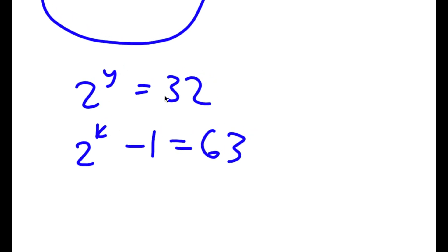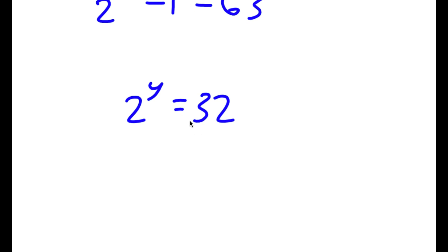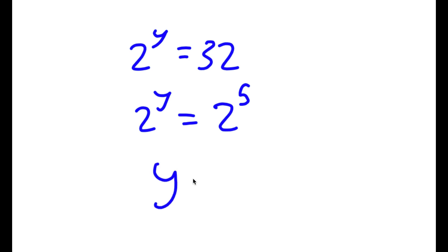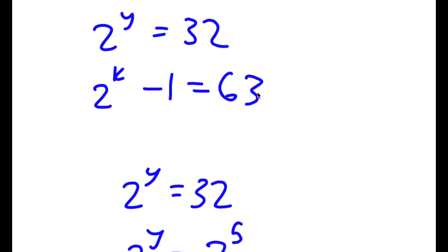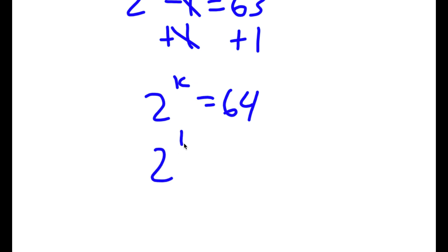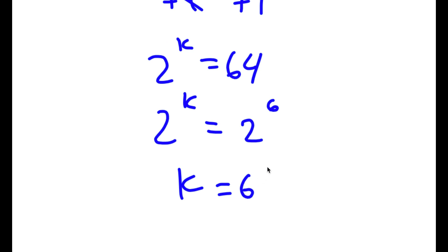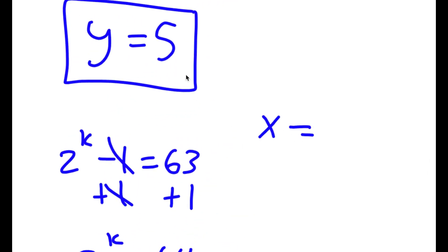For 2 to the power of y equals 32: since 32 is 2 to the power of 5, y equals 5. For 2 to the power of k minus 1 equals 63: adding 1 to both sides gives 2 to the power of k equals 64, and since 64 is 2 to the power of 6, k equals 6. Since x equals y plus k, x equals 5 plus 6, meaning x equals 11.